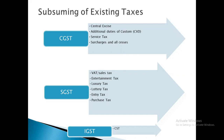Under SGST, the existing taxes subsumed include VAT, sales tax, entertainment tax, luxury tax, lottery tax, entry tax, and purchase tax. All these taxes are subsumed into the SGST. For IGST, the subsumed tax is CST — the Central Sales Tax between center and states.